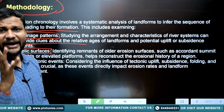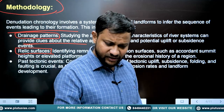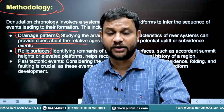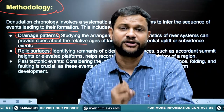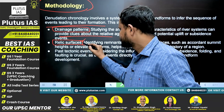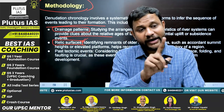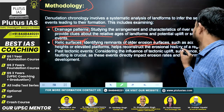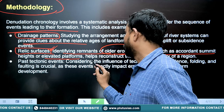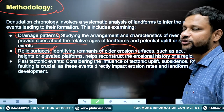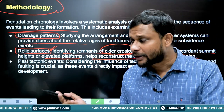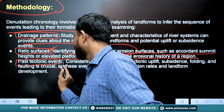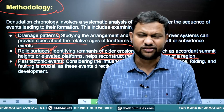The second method is relic surfaces or remnant surfaces. These are the leftover parts of uplifted topography and are very important because they help us read the past. Identifying remnants of older erosion surfaces — such as accordant summits or elevated platforms — helps reconstruct the erosional history of a region. This can be applied to the Andes or the Eastern Ghats in India. The third method is past tectonic events, where tectonic history helps connect with the chronological past of a region.